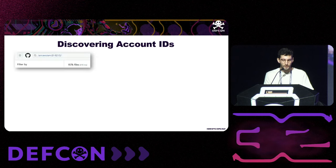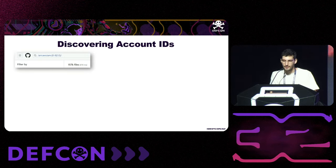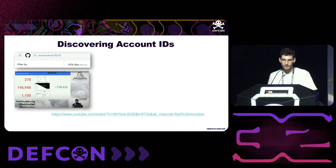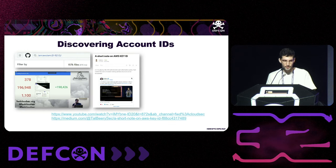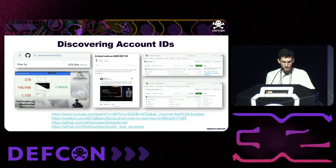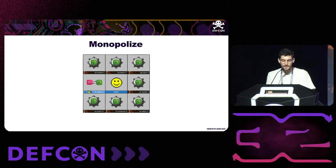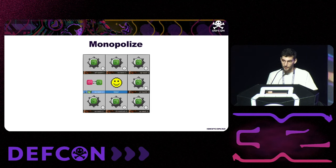If the identifier is a hash, search GitHub and Sourcegraph for leaked hashes and target them. If it's an account ID, there are multiple discovery methods: GitHub regex search for specific patterns, the GreyhatWarfare platform which collects publicly accessible S3 buckets — Jerome Brown extracted nearly 197,000 unique account IDs this way — extracting account IDs from AWS access key IDs as shown by Tal Berry, and known lists of AWS account IDs for large organizations. The last step is to monopolize: create buckets with predictable names across all AWS regions, open them publicly with permissive policies, and wait for victims to interact.